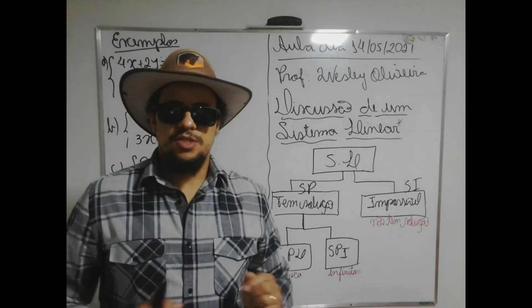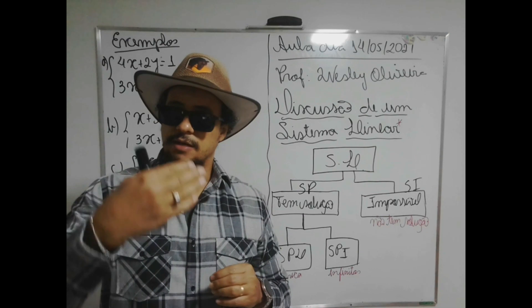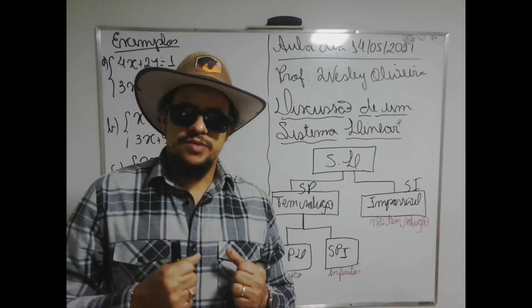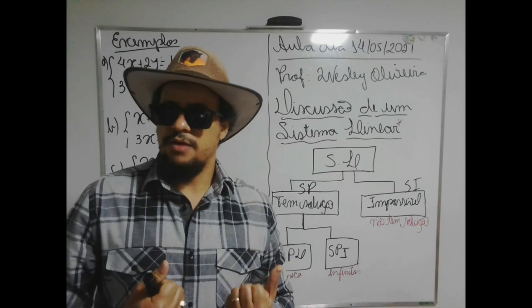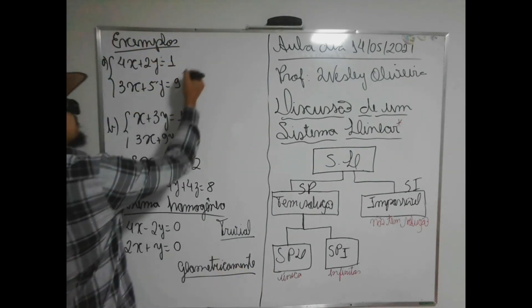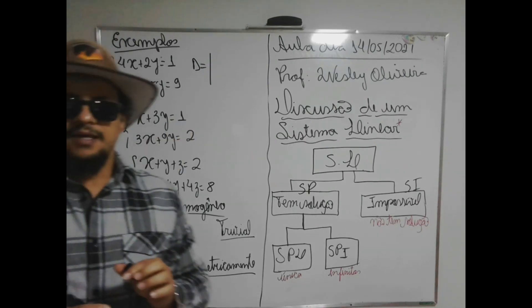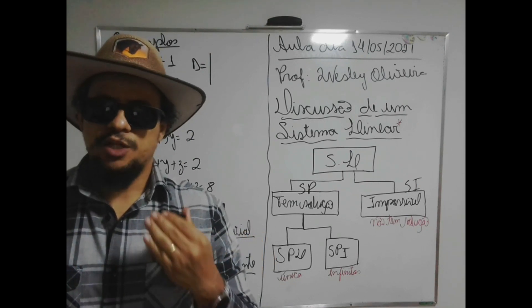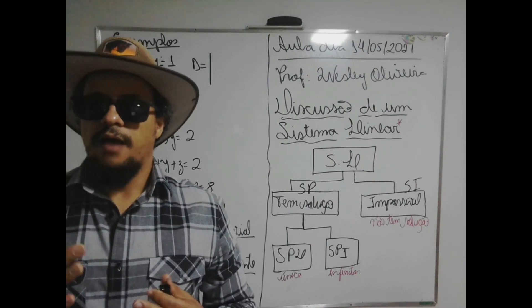Quando a gente vai resolver um sistema linear, tem delta, delta X, delta Y e delta Z, se for um sistema 3 por 3. Eu vou resolver esse sistema pensando na classificação dele. Na verdade, eu não vou nem resolver — quero só classificar. Se quero só classificar, vou apenas calcular o delta dele. De acordo com o delta, é que eu vou dar as orientações do que ele pode ser.